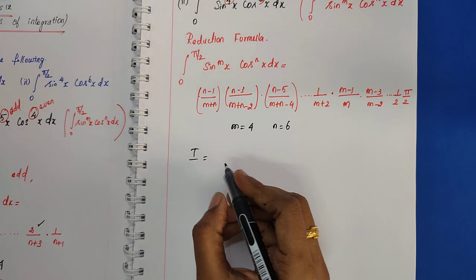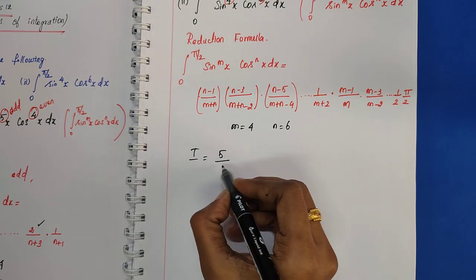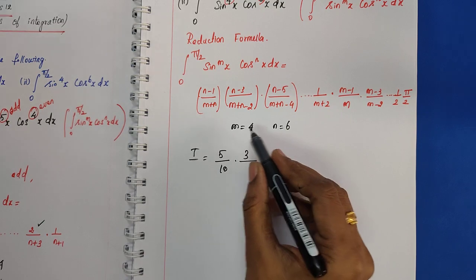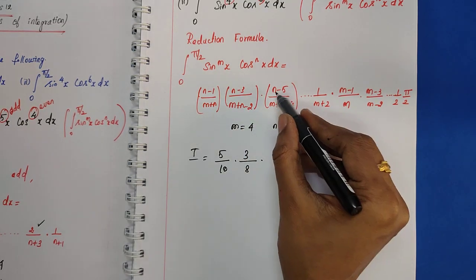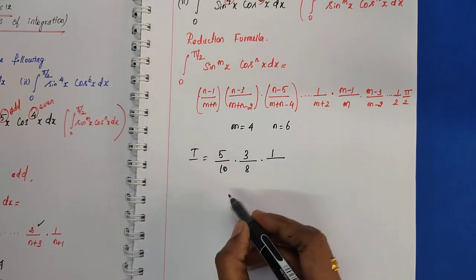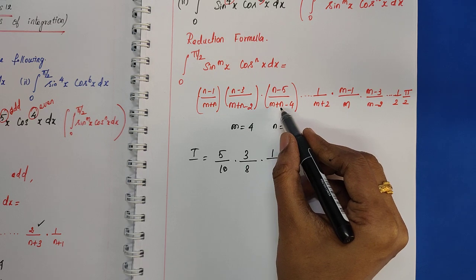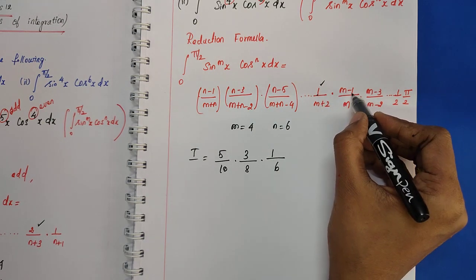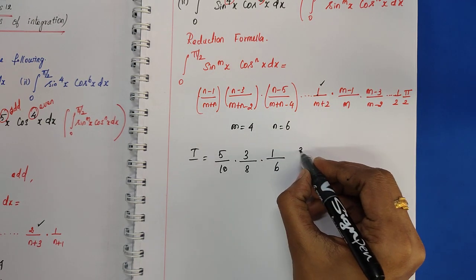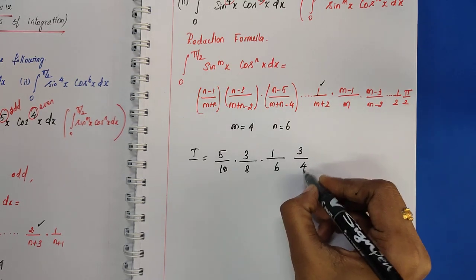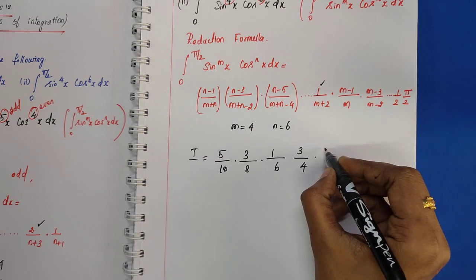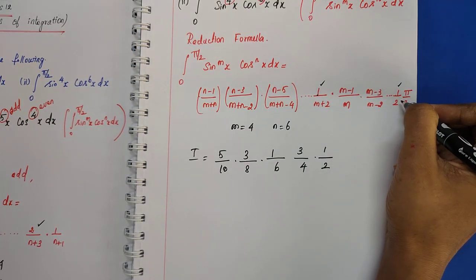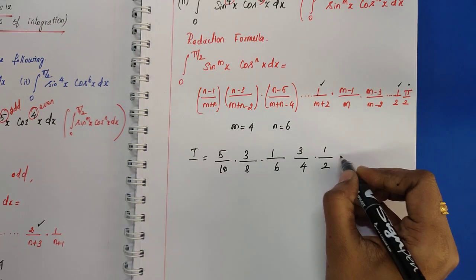I equals: n−1=5, m+n=10; n−3=3, m+n−2=8; n−5=1, m+n−4=6; then the term 1/2; then m−1=3, m=4; m−3=1, m−2=2; then 1/2; then π/2. So: (5/10) × (3/8) × (1/6) × (3/4) × (1/2) × (1/2) × π/2.